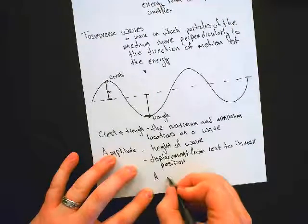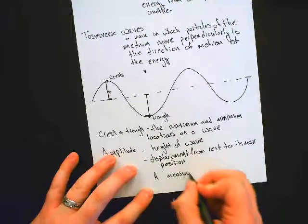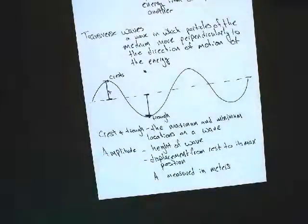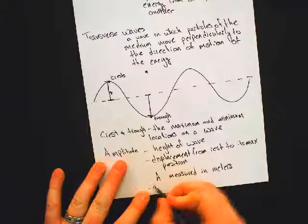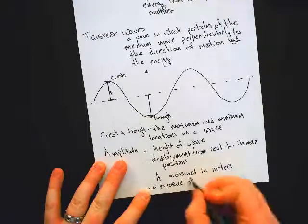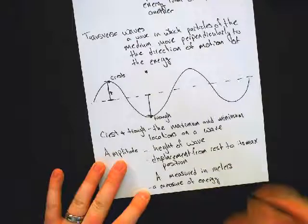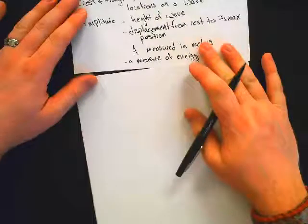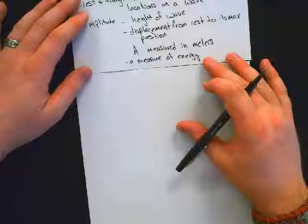In equations, we will see amplitude as A, measured in meters. For a transverse wave, amplitude is also a measure of the amount of energy carried by the wave. The greater the amplitude, the more energy is being carried. A measure of energy. Questions on amplitude, crest, or trough?